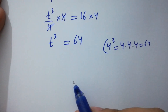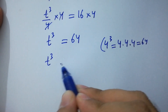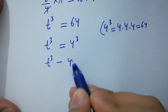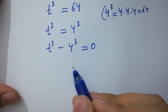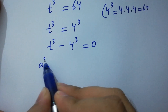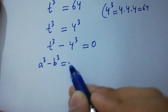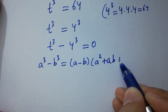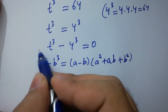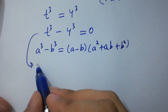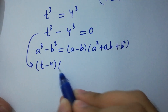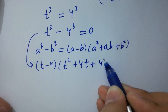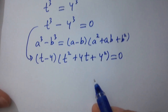So it will be t cubed equals 4 cubed, giving us t cubed minus 4 cubed equals 0. We know the formula of a cubed minus b cubed, which equals a minus b times a squared plus ab plus b squared. So we have t minus 4 times t squared plus 4t plus 4 squared equals 0.